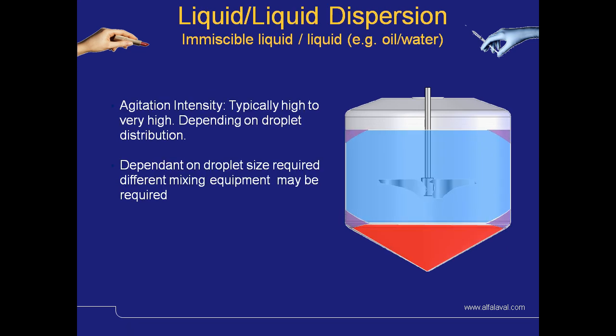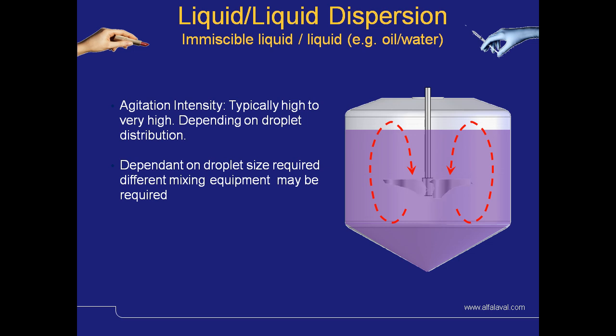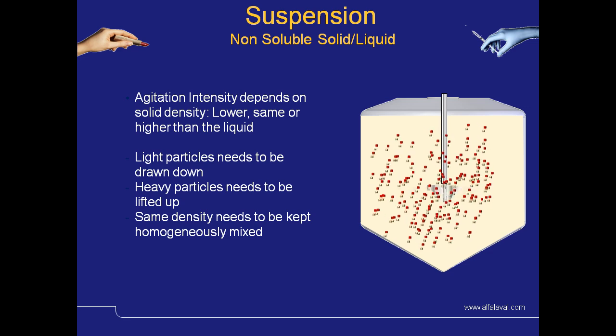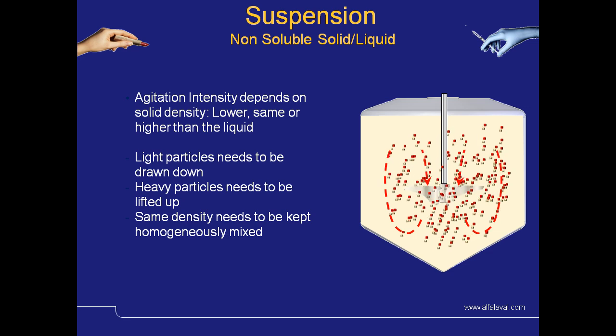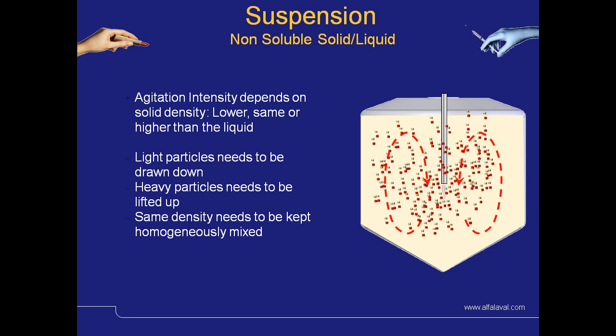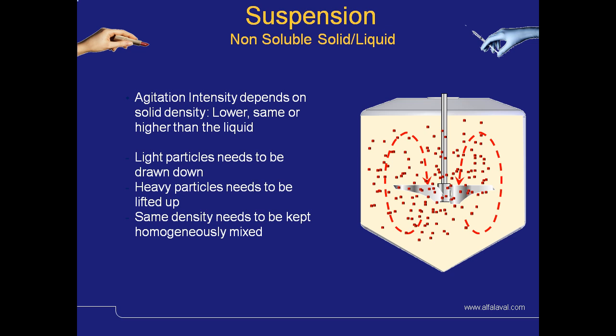For more demanding applications where we are trying to mix an immiscible liquid such as oil and water, the agitation intensity will be extremely high, and dependent on the droplet distribution required, may mean very high shear mixing. In an application where we are trying to keep non-soluble solids and liquids together, the agitation intensity depends very much on the solid density in relationship to the liquid. In these instances, light particles need to be drawn down, heavy particles need to be lifted up, and those of the same density need to be kept homogeneously mixed. This is where the design of the impeller and agitator is very important.